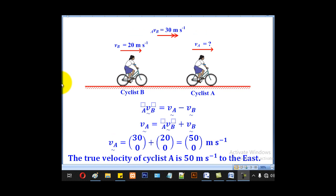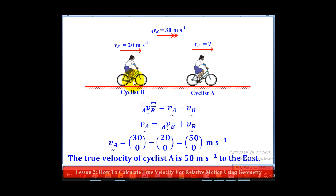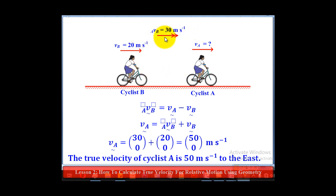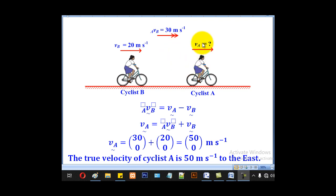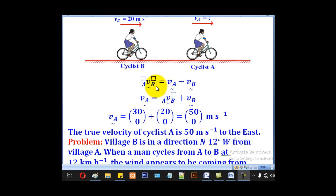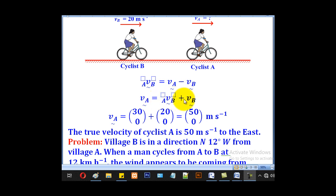In lesson 1, you already covered what relative velocity means. Consider two cyclists, cyclist B and cyclist A. Cyclist B is moving with a velocity of 20 m/s and sees cyclist A as though she is moving with a velocity of 30 m/s. The true velocity of cyclist A can be got from the formula of relative velocity: velocity of A relative to B equals VA minus VB. When we make VA the subject, we get VAB plus VB.